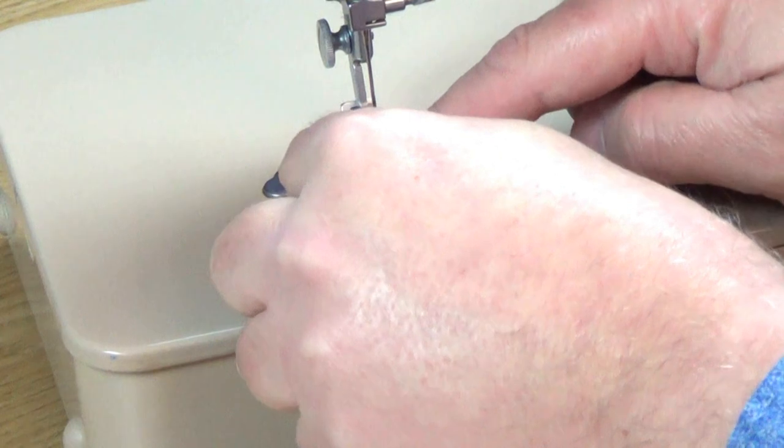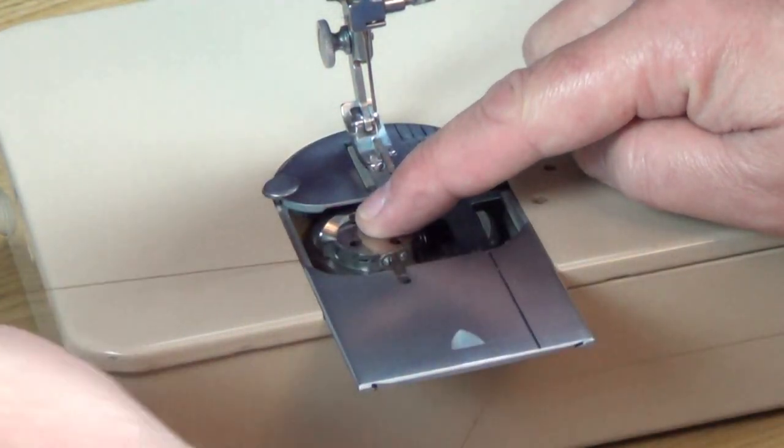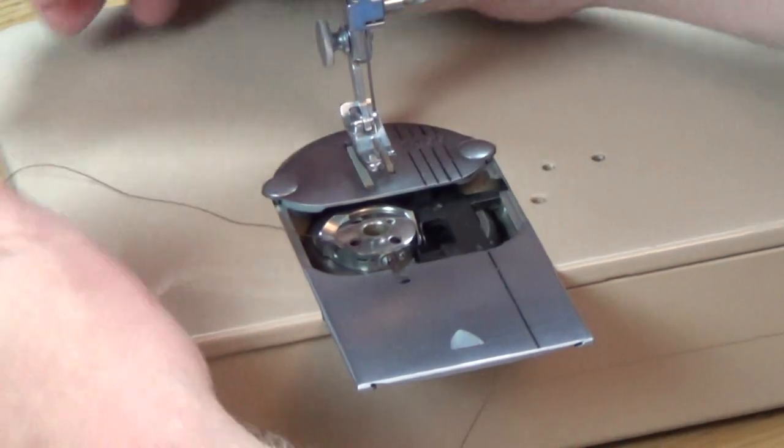Drop the bobbin into the bobbin case with the thread coming off in an anti-clockwise direction. Pull the thread through the tension spring, and over towards the needle.